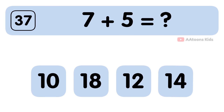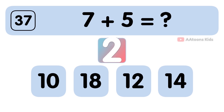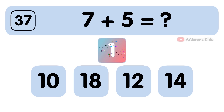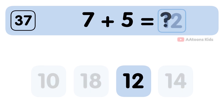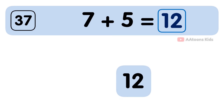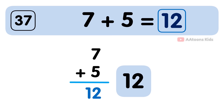7 plus 5 is equal to 12. The answer to 7 plus 5 is 12.